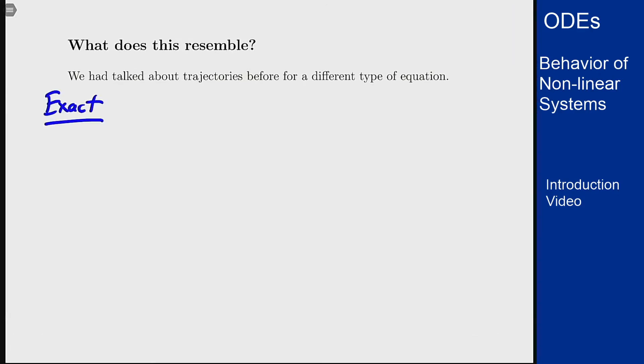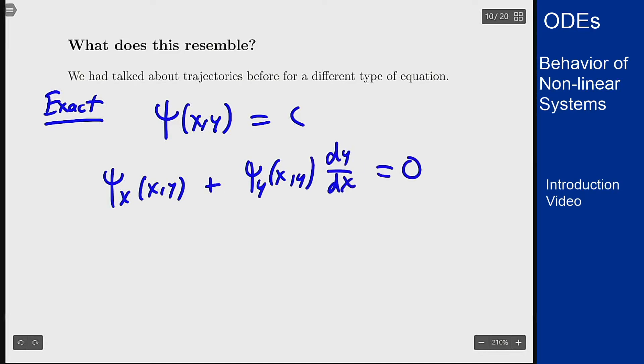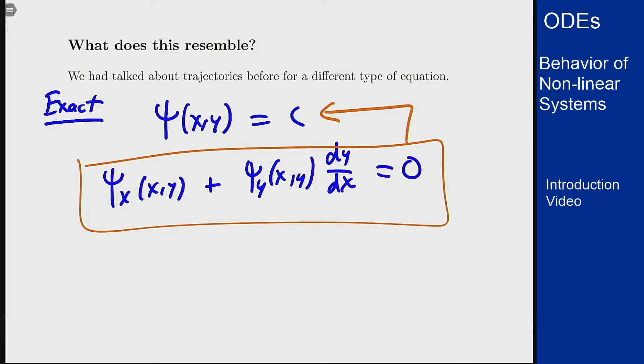What was the idea of an exact equation? Well, it was the idea that I had some function ψ(x,y) that was going to be equal to a constant. If I differentiate this in x I would get something like ψ_x(x,y) plus ψ_y(x,y) times dy/dx equals zero, and for an equation of this form I could re-convert it back into this form up here to then get the trajectories of my solution based on that setup. So I think about the same thing here now for systems.